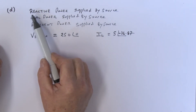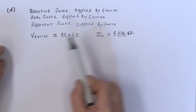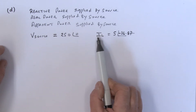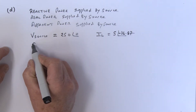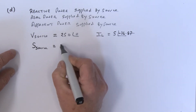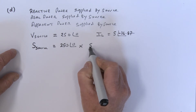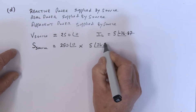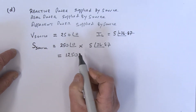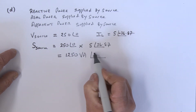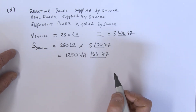In Part D, we need to find the reactive power, real power, and apparent power supplied by the source. The source voltage is 250 at angle zero and the circuit current IL is 5 at angle minus 36.87 degrees. The apparent power from the source equals 250 at angle zero multiplied by the complex conjugate of IL, which is 5 at angle 36.87 degrees, giving 1250 volt-amps at an angle of 36.87 degrees.